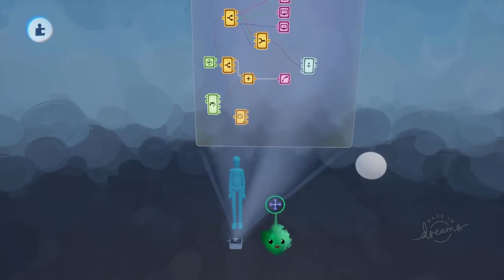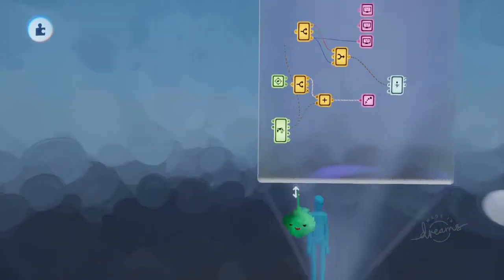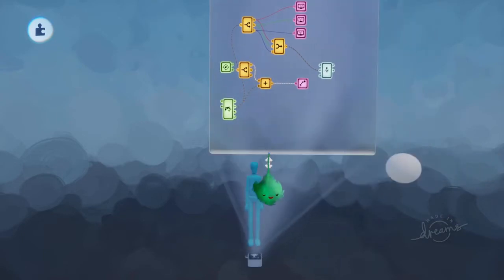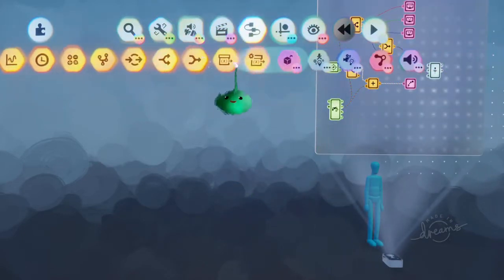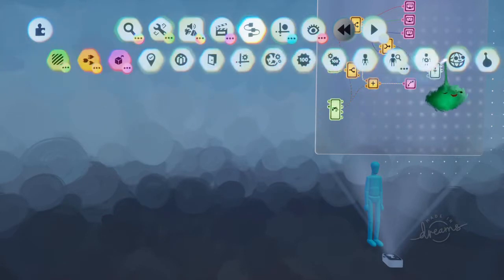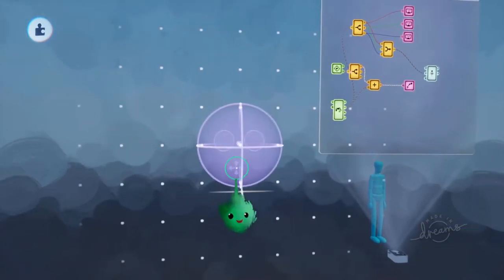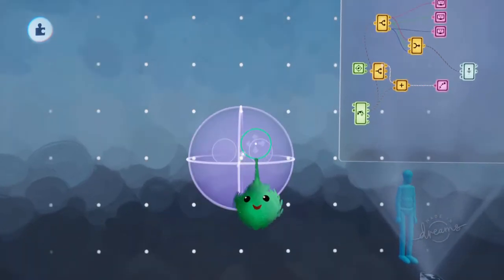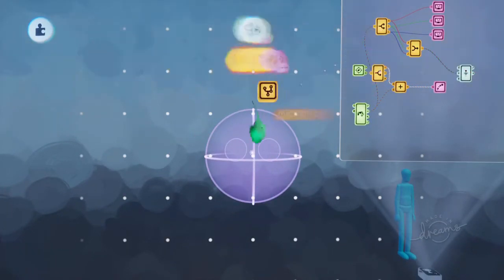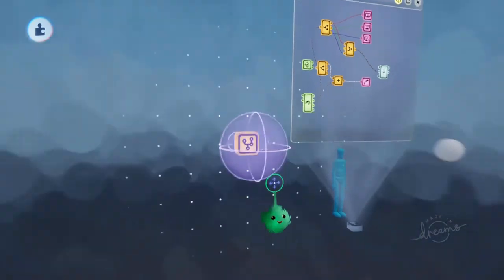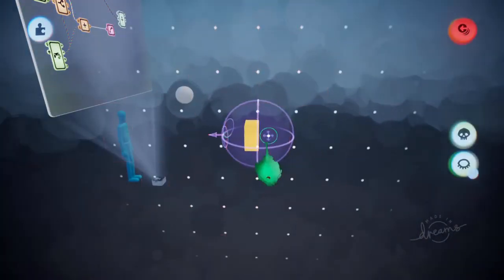But now how do we turn it from this camera relative thing to a kind of local space ignoring the camera thing? So let's just delete the chips for now. And we'll remake them. So on the grid, I'll make a new head tracker. So the head tracker matches the view of the player. So we'll need to get some information from that.